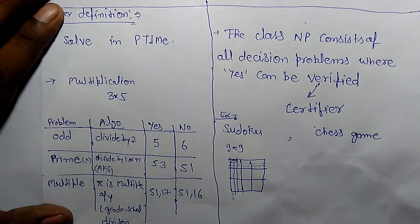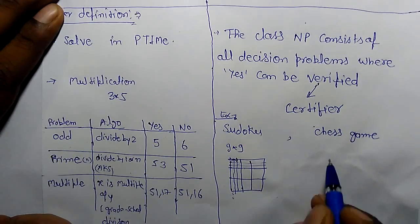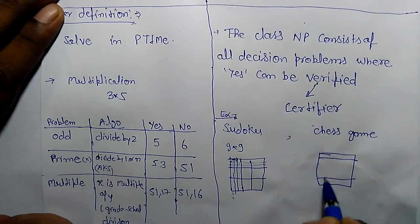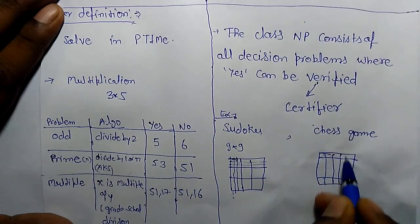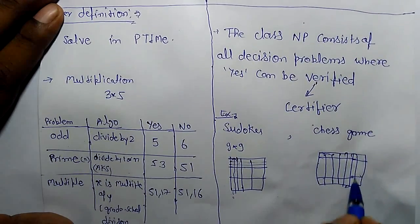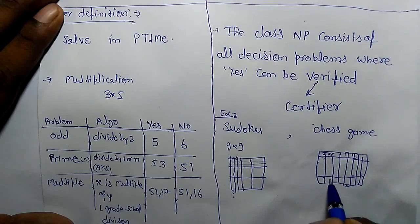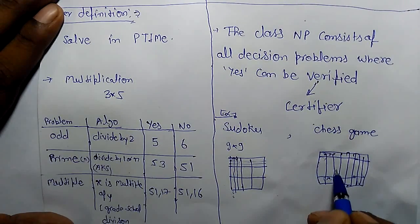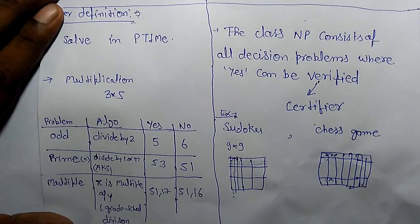Another example of NP class is the chess game. It is very difficult to say which move is good. In a chess game, if two players are playing, it is very difficult to say which move you will play to win the game.